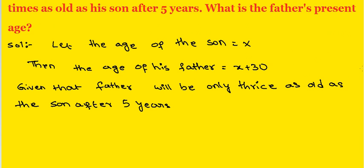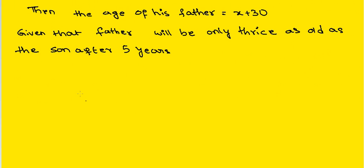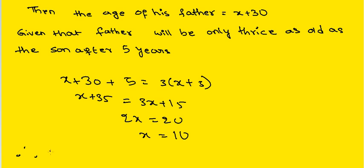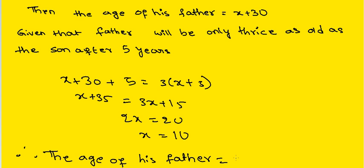After 5 years, therefore, from this: x plus 30 plus 5 equals 3 into x plus 5. So x plus 35 equals 3x plus 15. Then 2x equals 20, therefore x equals 10. Therefore, the age of his father equals x plus 30, that equals 40 years.